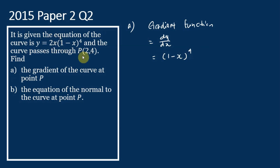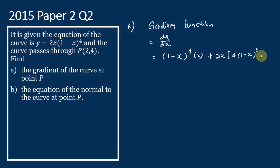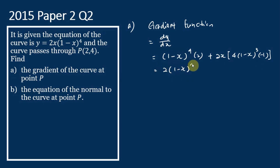Then plus copy 2x, and multiply by the derivative of (1 - x)^4. This is equal to 4(1 - x)^3, multiplied by the derivative of the expression inside the bracket. Differentiating (1 - x) gives negative 1. So this equals 2(1 - x)^4 minus 8x(1 - x)^3.